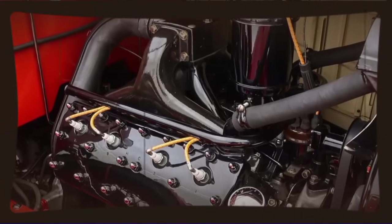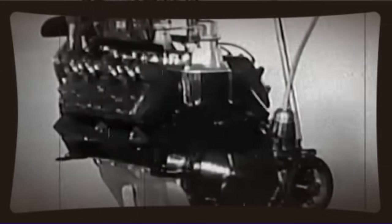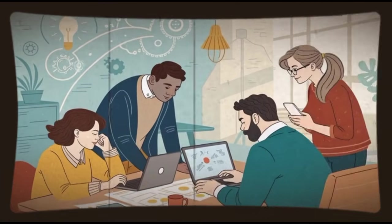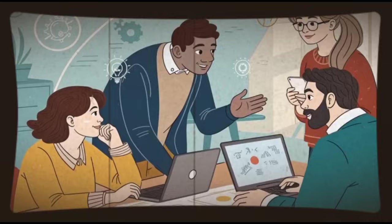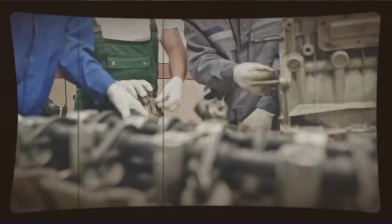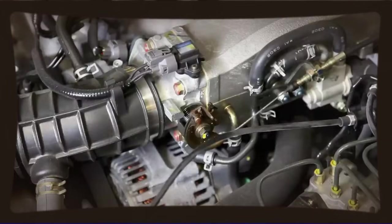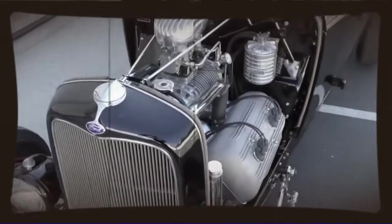The V8 configuration itself presented unique challenges for a two-stroke design. In a four-stroke V8, you have a carefully orchestrated firing order that keeps the engine balanced and smooth. With Ranto's two-stroke V8, he was getting twice as many power pulses, which meant the engine ran incredibly smoothly because there was always at least one cylinder firing at any given moment. The crankshaft could be lighter because it didn't need heavy counterweights to smooth out the power delivery. The whole engine could be more compact because you didn't need all the valvetrain components, camshafts, pushrods, rocker arms, and all that complexity that makes a four-stroke V8 so tall and heavy.